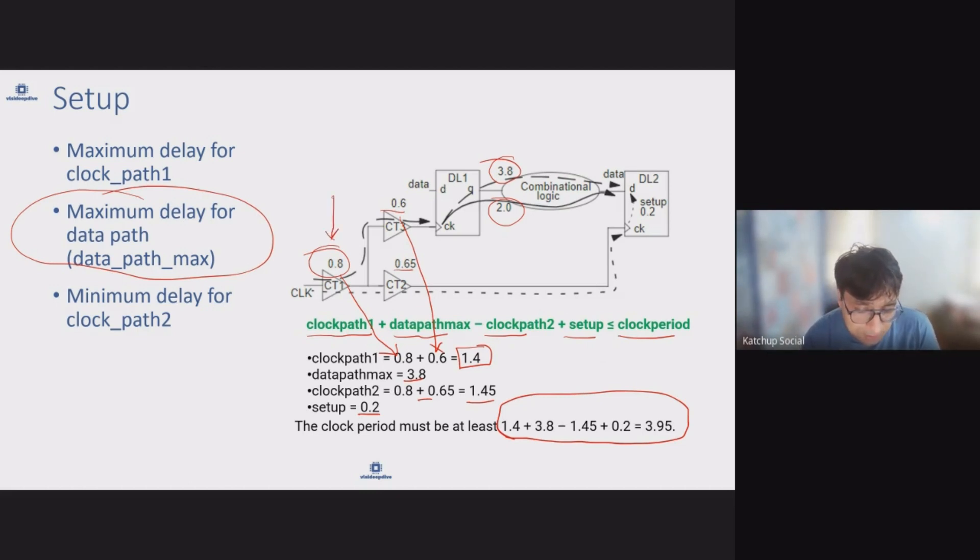Now there is one thing - here we are considering these clock path delays are the same, but it can be worst case or best case. So here also we have to pick worst case, and the clock can also have multiple paths, so then also accordingly clock delay has to be picked up.